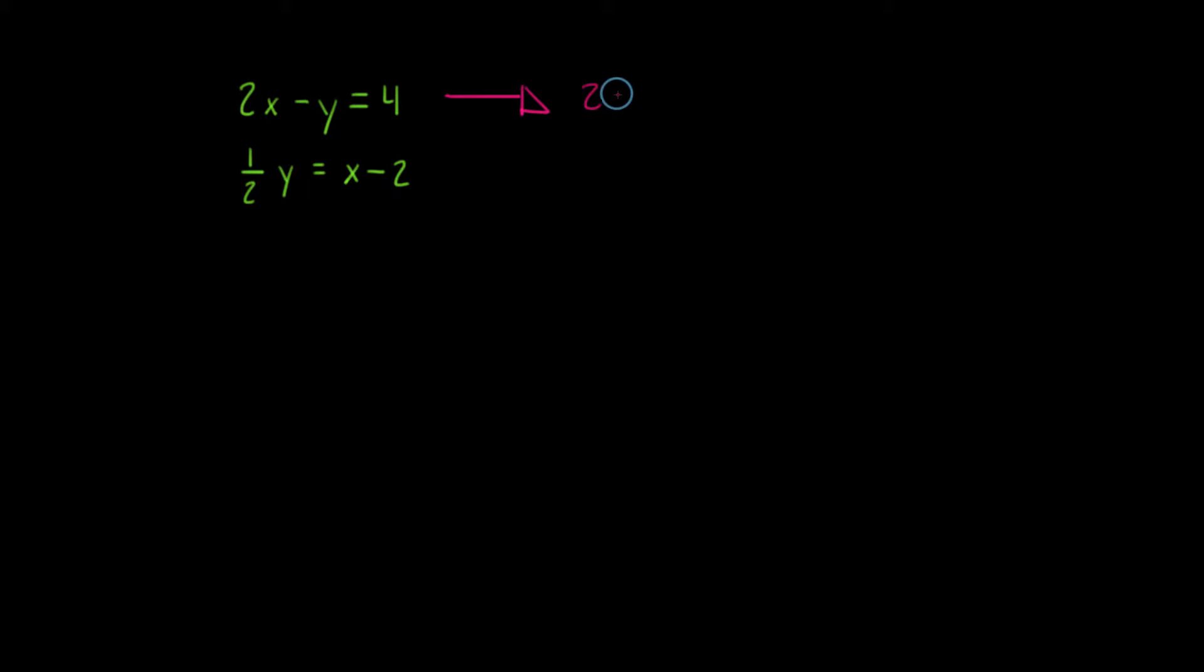So I have 2x minus y equals 4. I'm going to subtract 2x from both sides. I have negative y is equal to negative 2x plus 4.